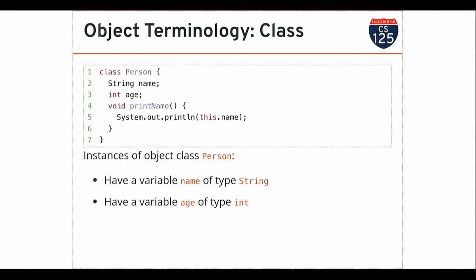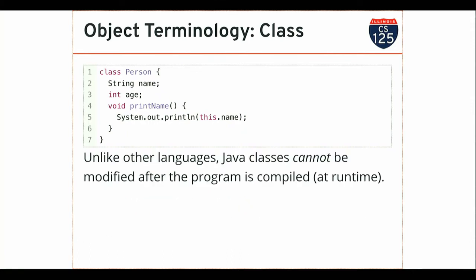If you create a Person and you try to access an attribute called weight, the compiler will complain and say you haven't defined that. This is the way we start to merge together disparate types of data in Java — I can have a Person that contains strings, ints, doubles, and maybe other more complex objects as well. One thing that distinguishes Java: unlike Python, once you define a class, you can't change it while the program is running. Java uses the class information when it compiles your code to check correctness.